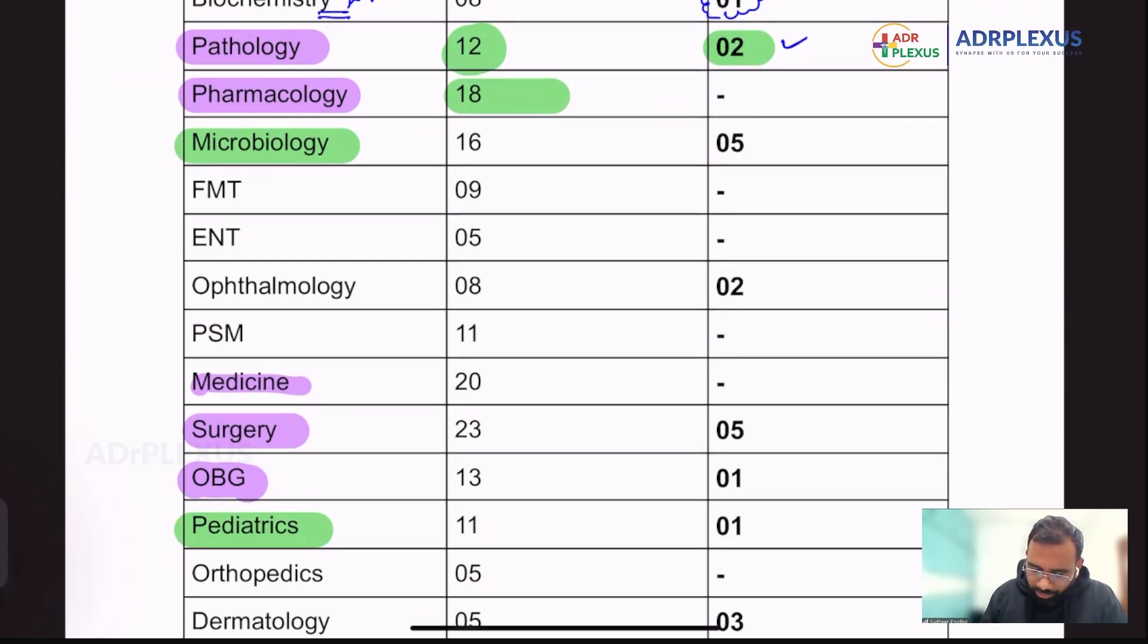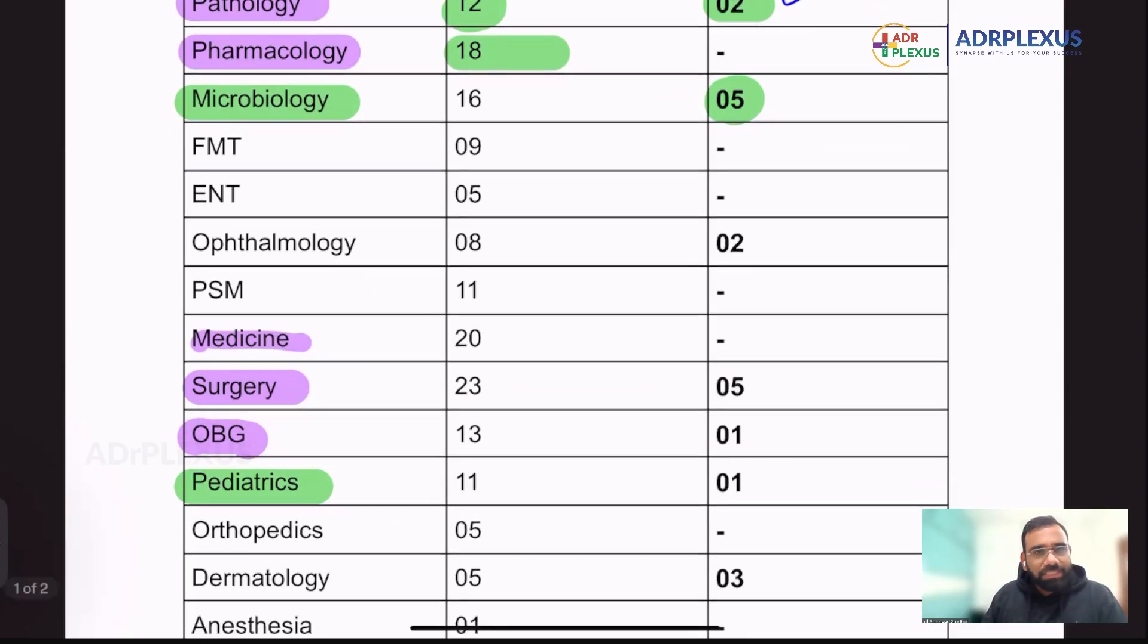And then coming to micro, in those 16 questions five were like image-based things. In those 16 also I can see almost like four questions were like direct name a test. So this test is used for what bacteria. So those are the questions I could see almost like three to four questions for such type of questions. And again, all the rickettsial diseases, all the vectors that was, I think, match the following. That was the question asked in the exam.